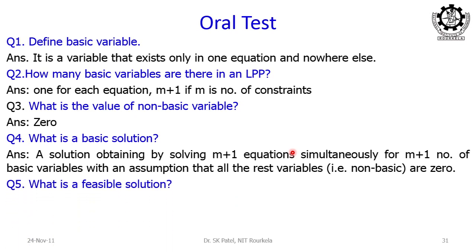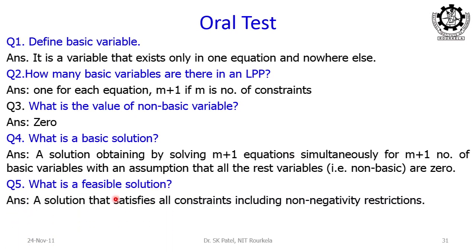What is a feasible solution? A feasible solution is one that satisfies all the constraints including the non-negativity restrictions. That means all the variables — all m+n+p variables and also including the z variable — must be either 0 or positive, that is, must be non-negative.